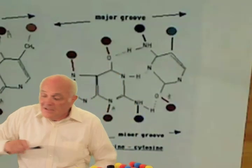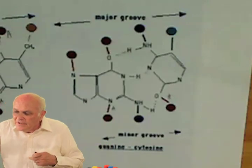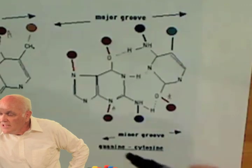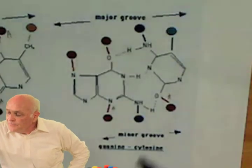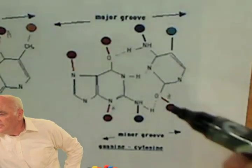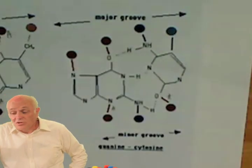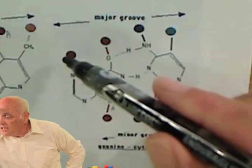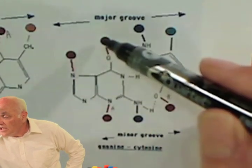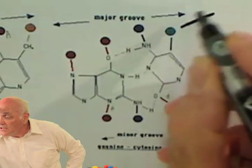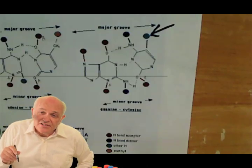Let's turn our attention to the chemistry. We have the cytosine-guanine base pair. The cytosine is on this side, the guanine is on this side. Across the top, this is in the major groove. We have a hydrogen acceptor, a hydrogen acceptor, a hydrogen donor, and then a methyl group right here. DNA methylation is on the methyl group of the cytosine.